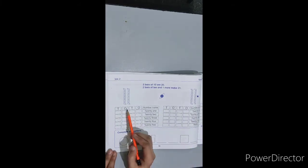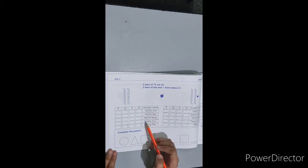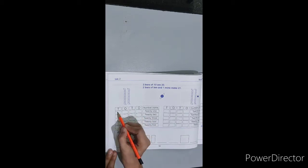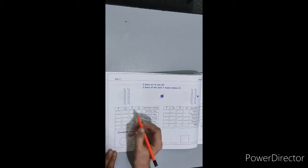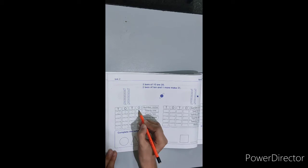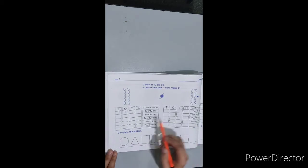Tens. Ones. Number name — this is our number name. We have to write it here. 21. Write in full block. 21. Aapne two times likhna hai — you have to write it two times, 21. Isi tarah se yeh sara page aapne complete karna hai — you have to complete the whole page like this.